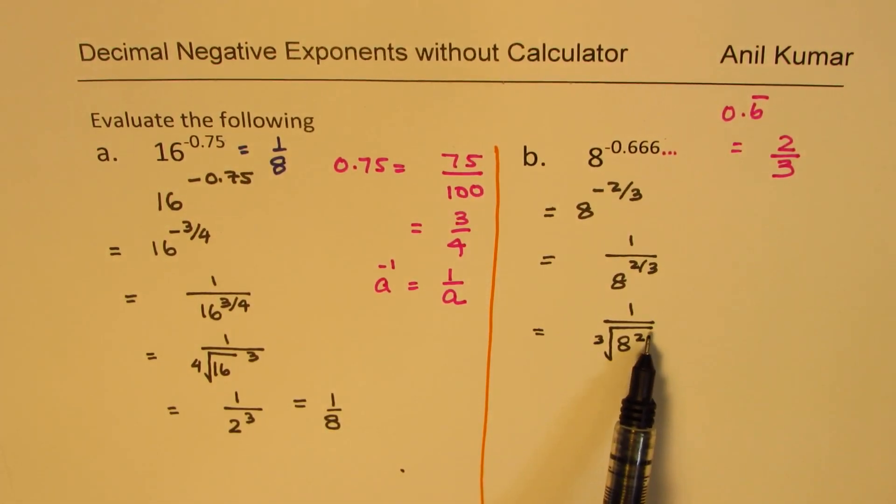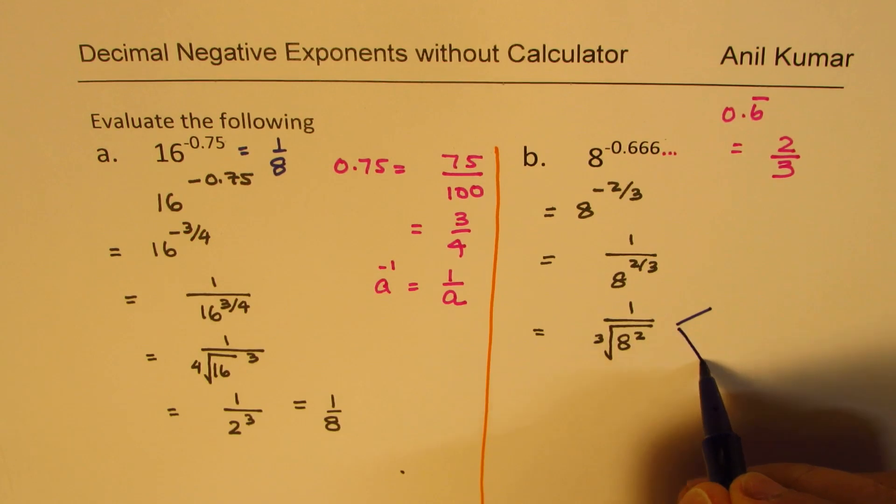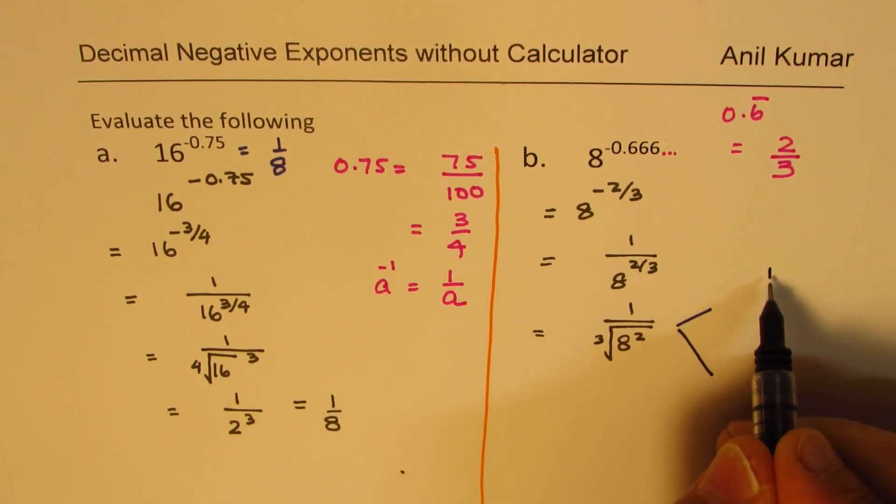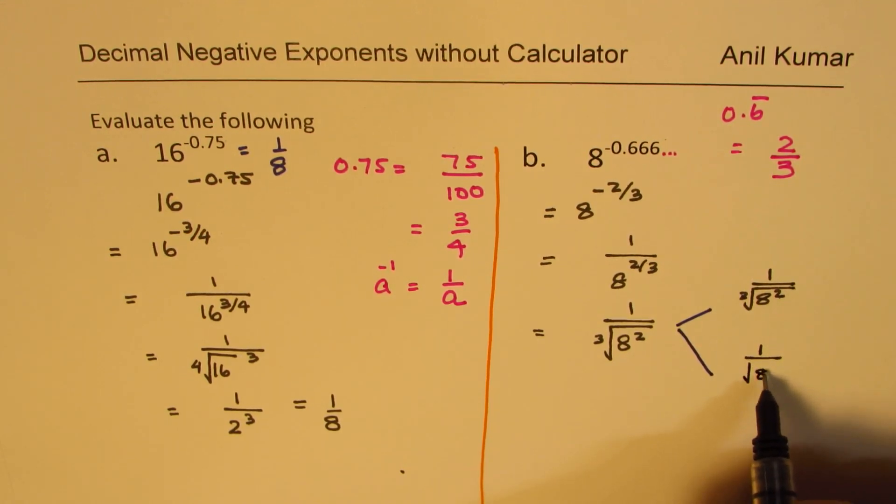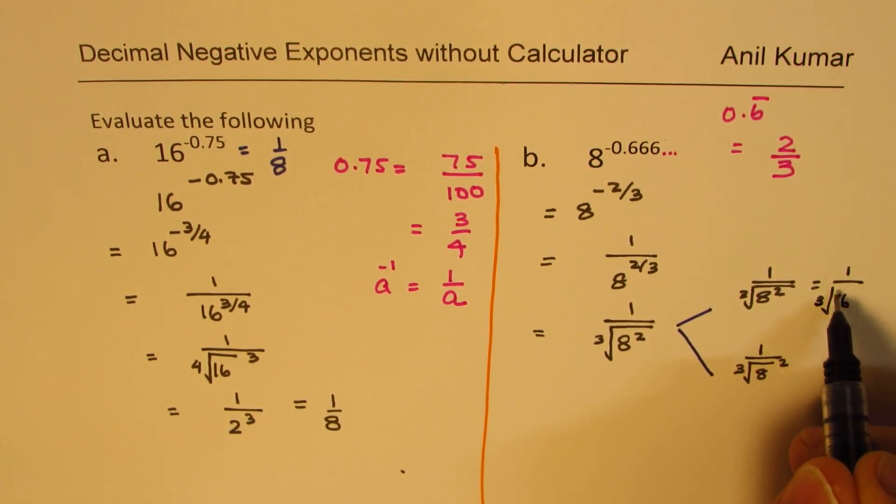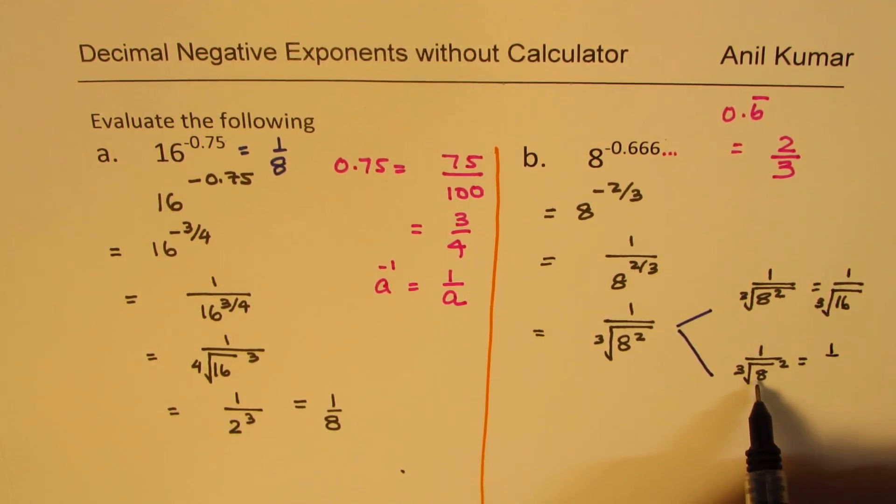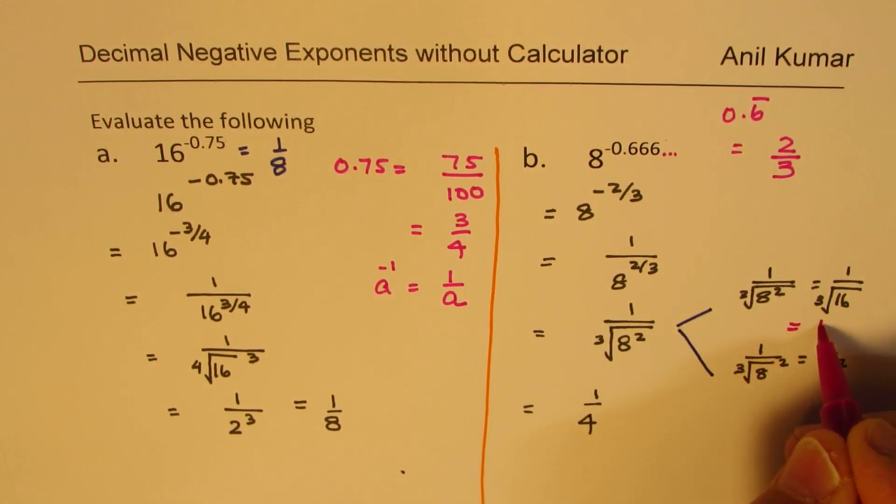This exponent could be written within the radical sign or outside. Both are one and the same thing. So here we have two options. We could either work out 1 over 8 square first and then find the cube root or we could do cube root of 8 first and then square it. Both options will give you the same answer. The first option here is 1 over cube root of 64. The second option: cube root of 8 is 2, so we get 1 over 2 square. In both cases, we get 1 over 4 as your answer.